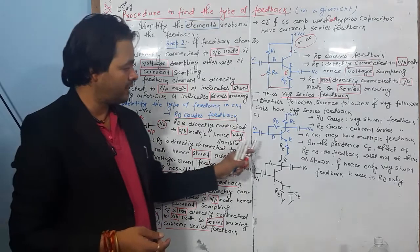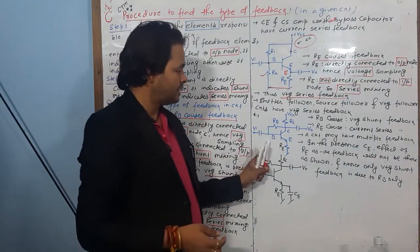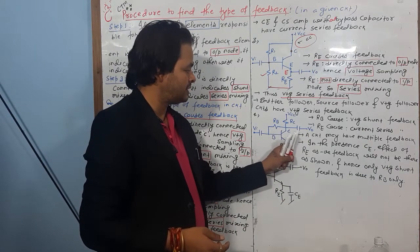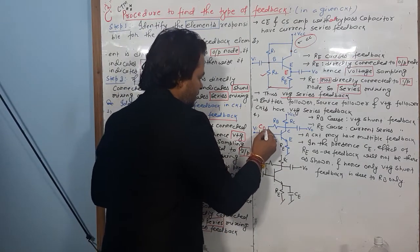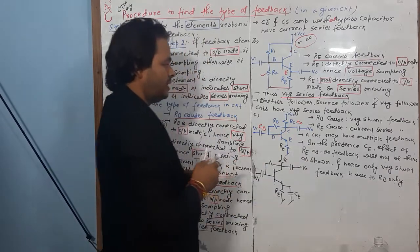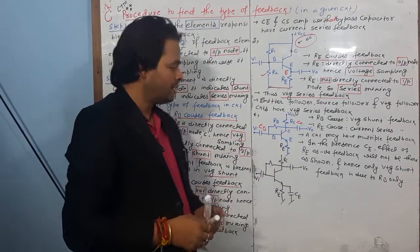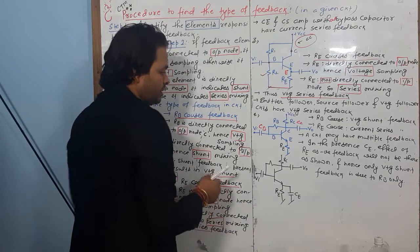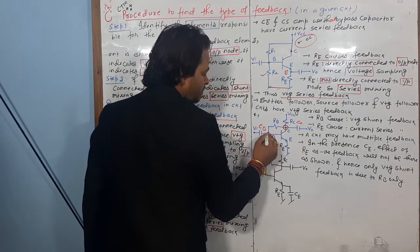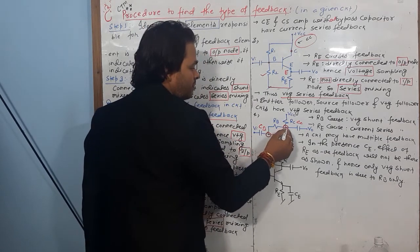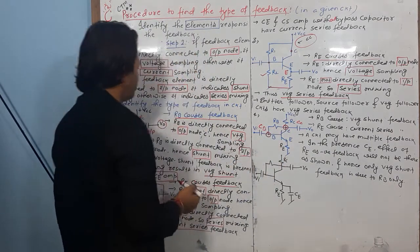Now for the fourth and most important problem. In this circuit, there are both RB and RE elements. RB is taken from the output at collector C and connected to the input at base B. So RB is directly connected to the output node and also directly connected to the input node.